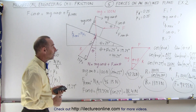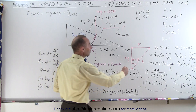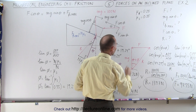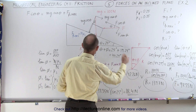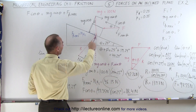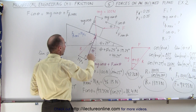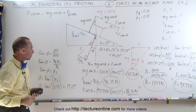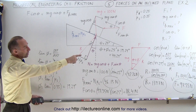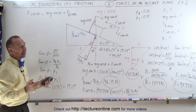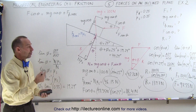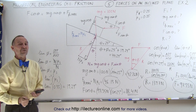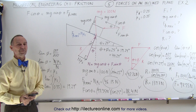Now you can see the power of this technique. All we have to do is calculate angle phi, which can be found by simply using the relationship of this right triangle. Once we find phi, we get the combined angle, and then we can very easily find the reaction force R and the applied force F. And that's how it's done.